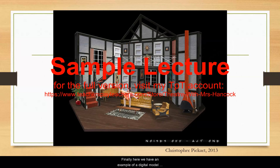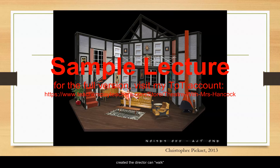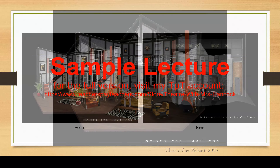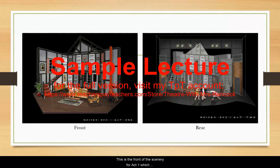Here we have an example of a digital model created by computer. While this is a still image, in the software in which it was created, the director can walk around the set and see it from different vantage points, which is important for this particular set because it completely revolves to reveal the backstage. This is the front of the scenery for Act 1, which revolves completely for Act 2.